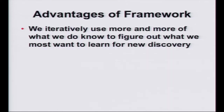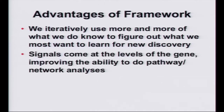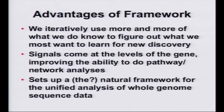The advantage of this framework is that we're iteratively using more of what we know — all the information on how genome variation relates to transcript levels — to learn what we most want to know: what are the genes? We get genes with this gene-based test, and we get directions of effects. It's a much more natural way to move into pathway and network analyses. We're also looking at using this in whole genome sequence data to combine common and rare variant contributions, getting gene-level information that unifies the common variant regulatory end with rare variant information on the protein itself.